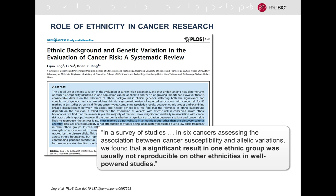Why does this matter in cancer? A review article in PLOS One highlighted a strong relationship between the patient's ethnic background and cancer risk evaluation. Most cancer markers do not validate in an ethnic group other than the one that constituted the discovery cohorts. The authors examined six cancer studies on cancer risk and allelic variations and found that significant results in one ethnic group were usually not reproducible in other ethnicities in well-powered studies. So it very much matters to look at the particular ethnicity and all genetic variation — both SNPs and structural variants.